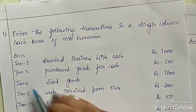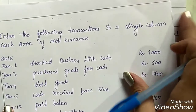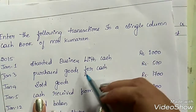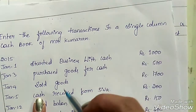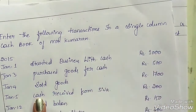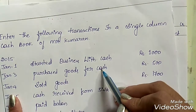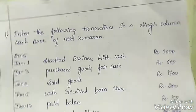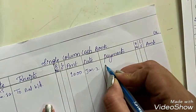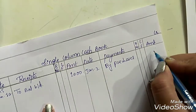The second transaction: on January 3rd, purchased goods for cash Rs. 500. When we purchase goods, we are making a payment of cash — we pay the cash and receive the goods. So this should be taken on the credit side, the payment side. Entry: January 3rd, by purchases, Rs. 500.